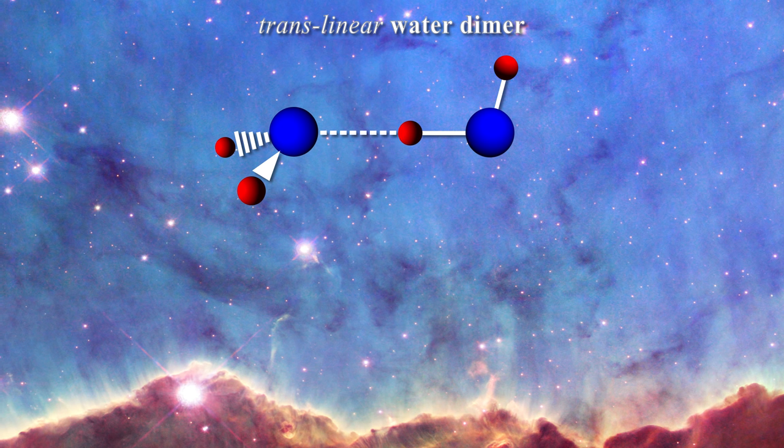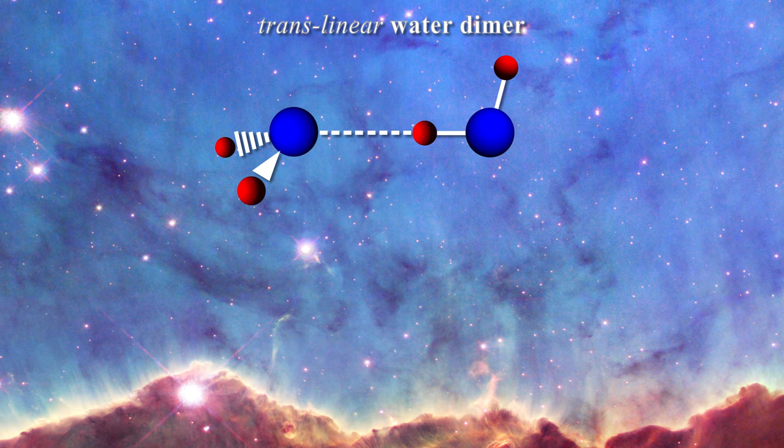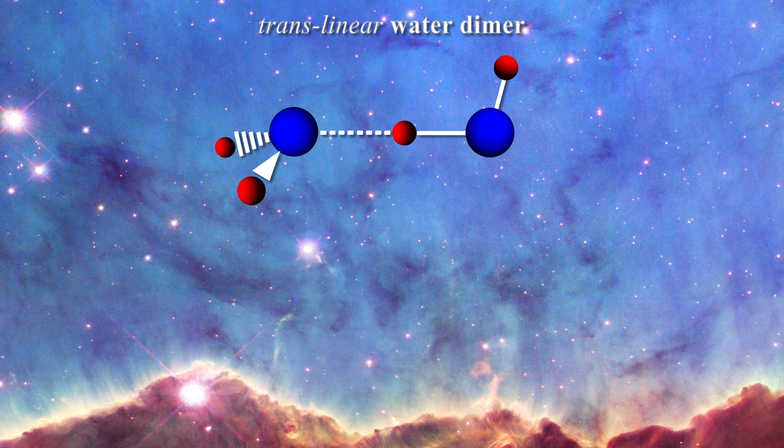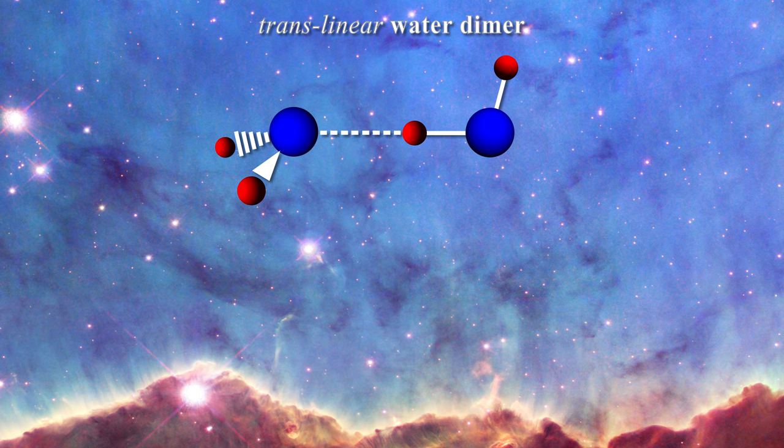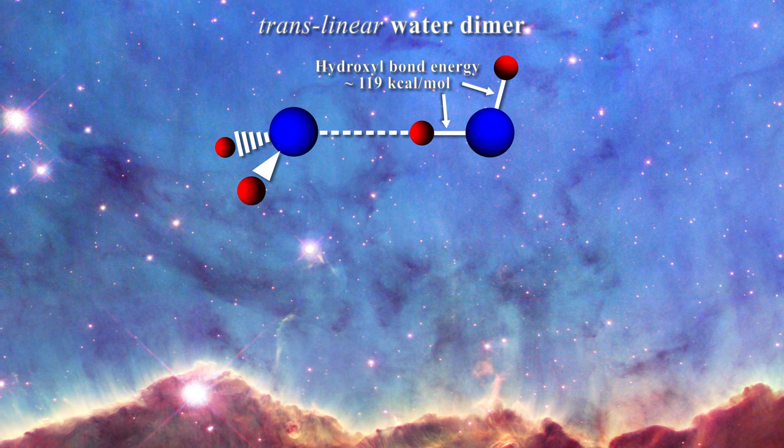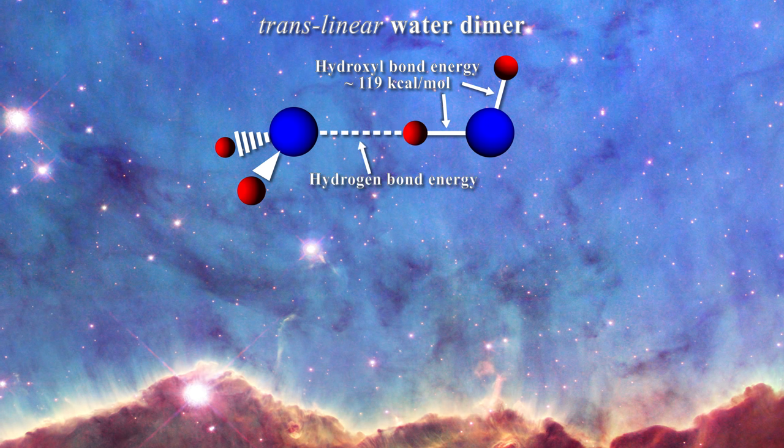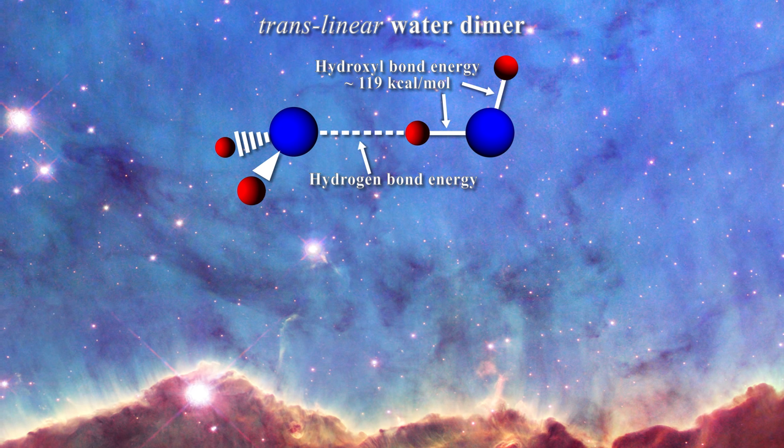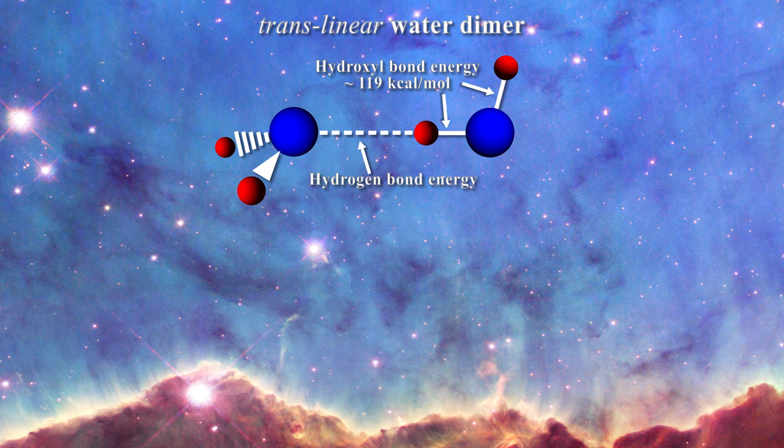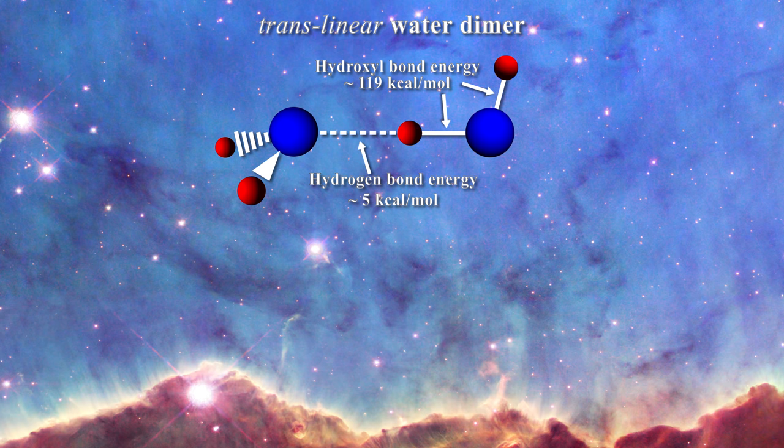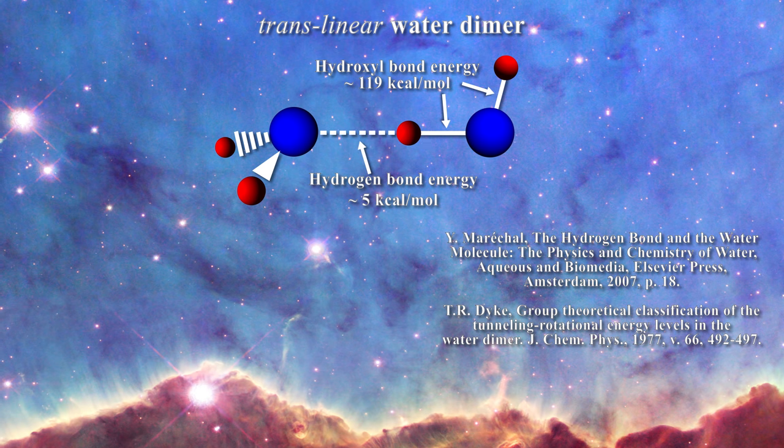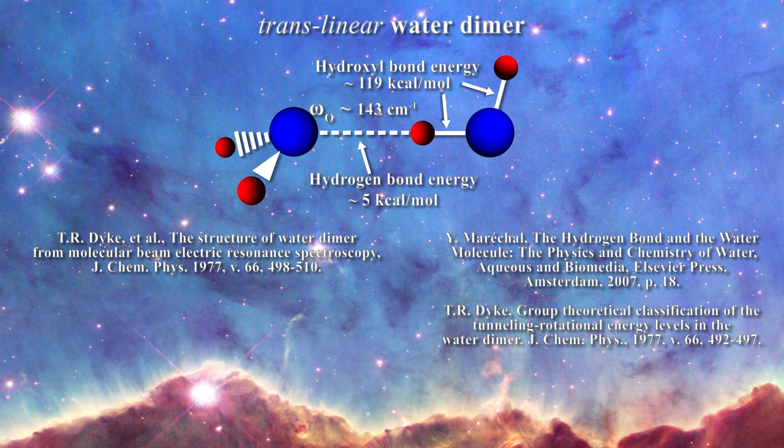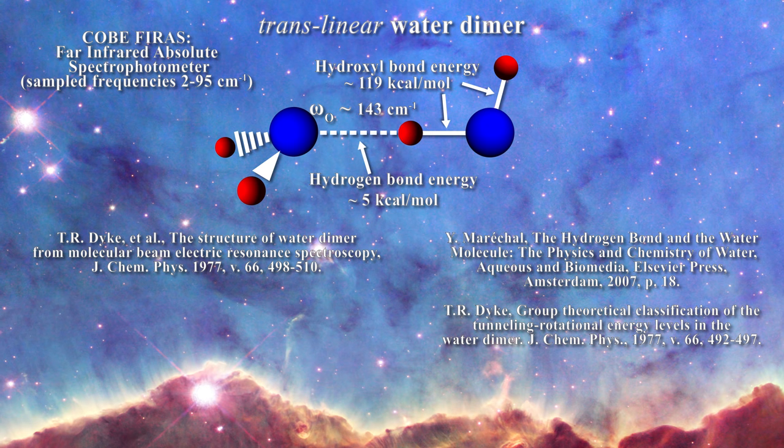Now in order to gain further insight into this problem, we can treat each bond separately as harmonic oscillators. That is because they have dramatically different energies as we shall soon see. For instance, we saw that the bond energy of the hydroxyl bond is on the order of 119 kilocalories per mole. How about the bond energy of the hydrogen bond we just created? Well, in the water dimer, the hydrogen bond is much stronger than that reported for liquid water. The hydrogen bond in the water dimer has been estimated to have a bond energy of about 5 kilocalories per mole as can be seen here. The water dimer has a fundamental frequency omega of 143 reciprocal centimeters in the far infrared. Note that the Furas horn on the COBE satellite also sampled the far infrared region.